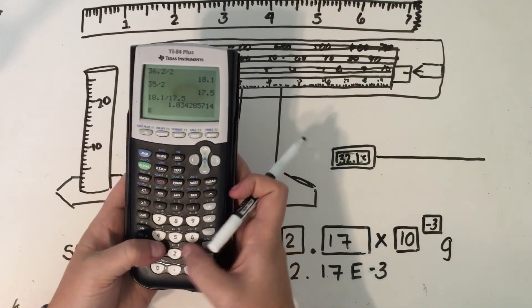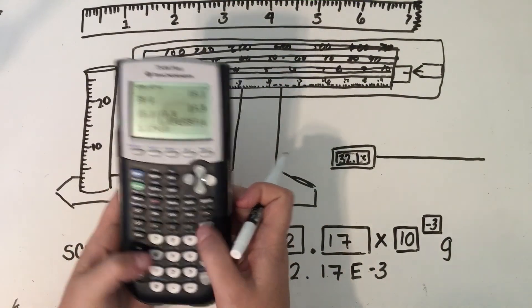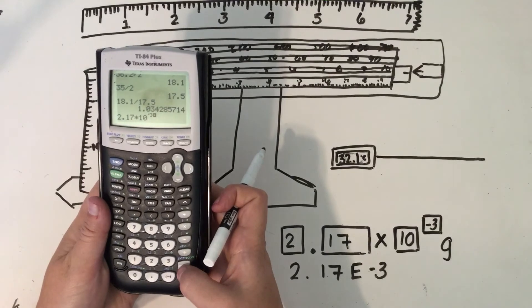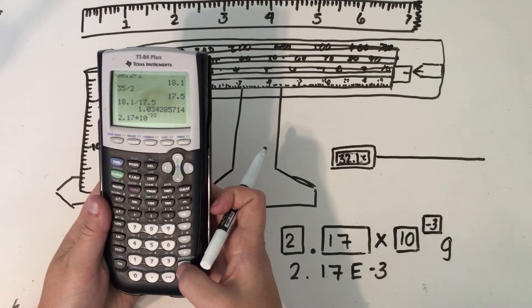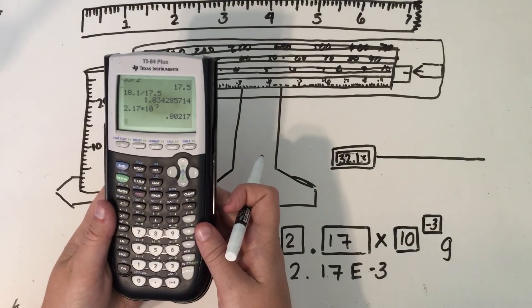Because when we want to type times 10 to the, we really need to get out of the habit of typing it as times 10 carat. It works sometimes, but sometimes especially when we're dividing by a big or small number it's going to mess up your entire calculation.